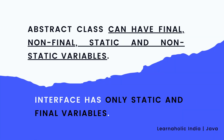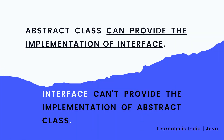Third, abstract class can have final, non-final, static, and non-static variables, whereas interface has only static and final variables. Fourth, abstract class can provide the implementation of interface, whereas interface can't provide the implementation of abstract class.